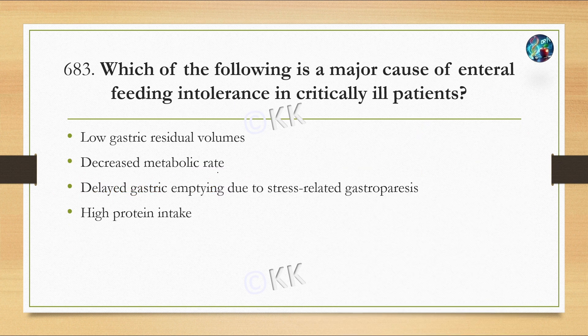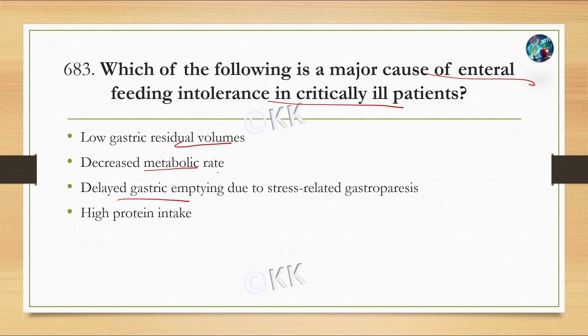Next question: which of the following is a major cause of enteral feeding intolerance in critically ill patients? Option A: low gastric residual volumes. Option B: decreased metabolic rate. Option C: delayed gastric emptying due to stress-related gastroparesis. Option D: high protein intake.